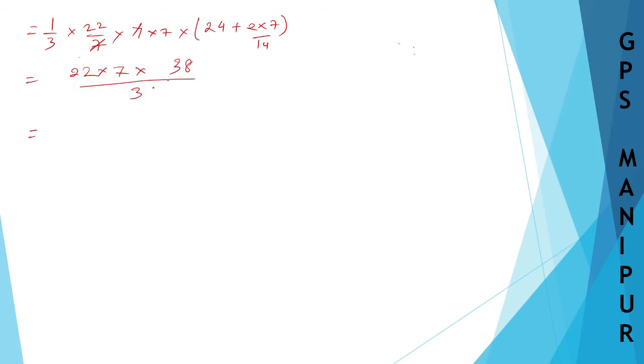Now 7 cancels out, so 22 times 7 times (24 plus 14, which is 38) divided by 3. Let me write down: 22 times 7 is 154. 154 times 38... [performs multiplication] gives us 5852 divided by 3.